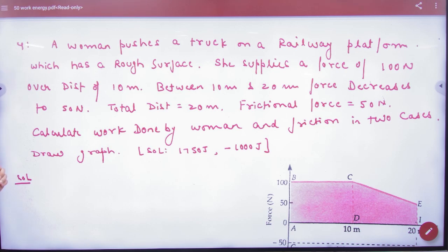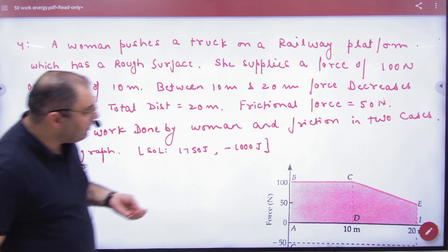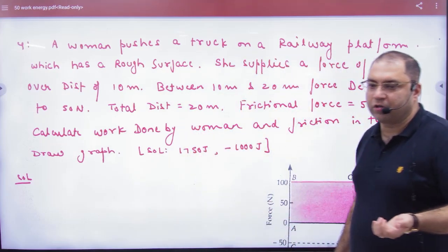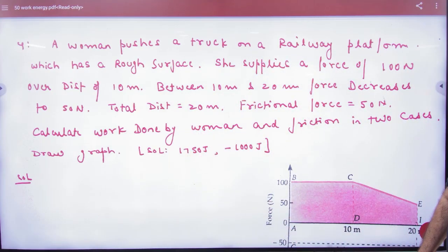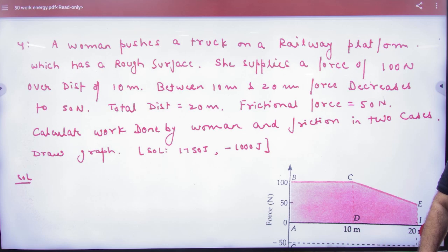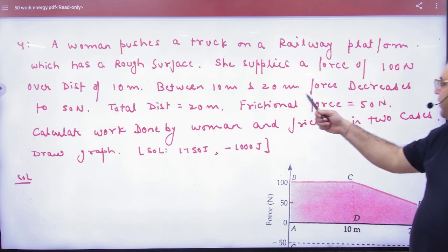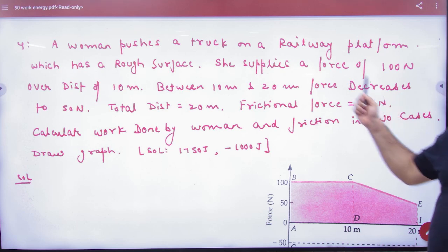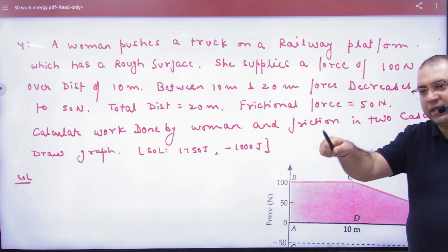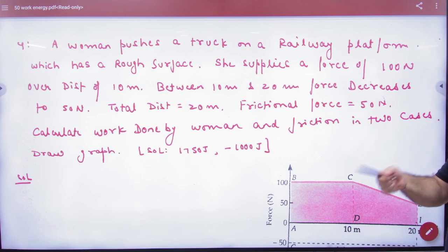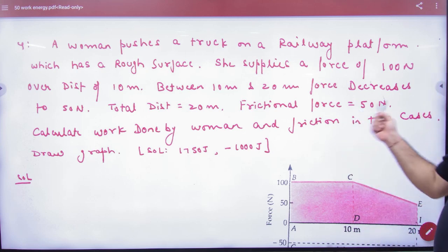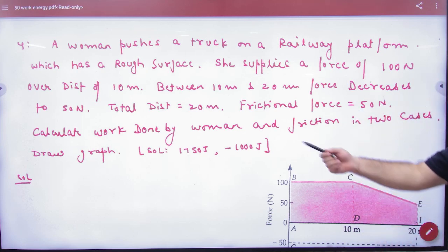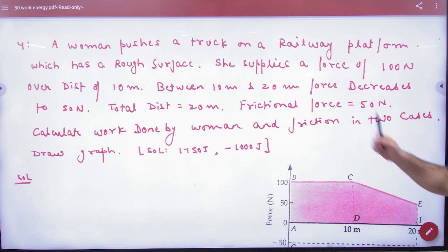A woman pushes a truck on a railway platform which has a rough surface — there is friction. She supplies a force of 100 Newton over a distance of 10 meters. Then for the next 10 meters, the force decreases to 50 Newton. Total distance covered is 20 meters. Frictional force is 50 Newton. Calculate work done by the woman and by friction in both cases.